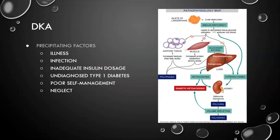Precipitating factors for DKA include illness, infection, and inadequate insulin dosage — either the pump wasn't set right or they weren't dosing correctly. It could also be undiagnosed type 1 diabetes, since finding a patient in DKA is a common way type 1 is first diagnosed. Poor self-management — a type 1 diabetic who isn't managing their disease — and neglect by family or caregivers can also lead to DKA.